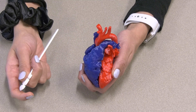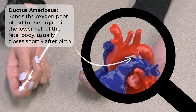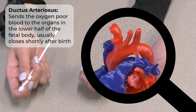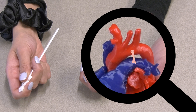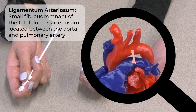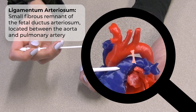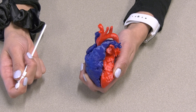Before a baby is born, there is a blood vessel called the ductus arteriosus that connects the aorta to the left pulmonary artery, to allow the blood to skip the uninflated lungs in an unborn baby. After birth, this blood vessel closes, leaving behind tissue called the ligamentum arteriosum, which would be located right here. This does not usually cause any problems in the typical heart.